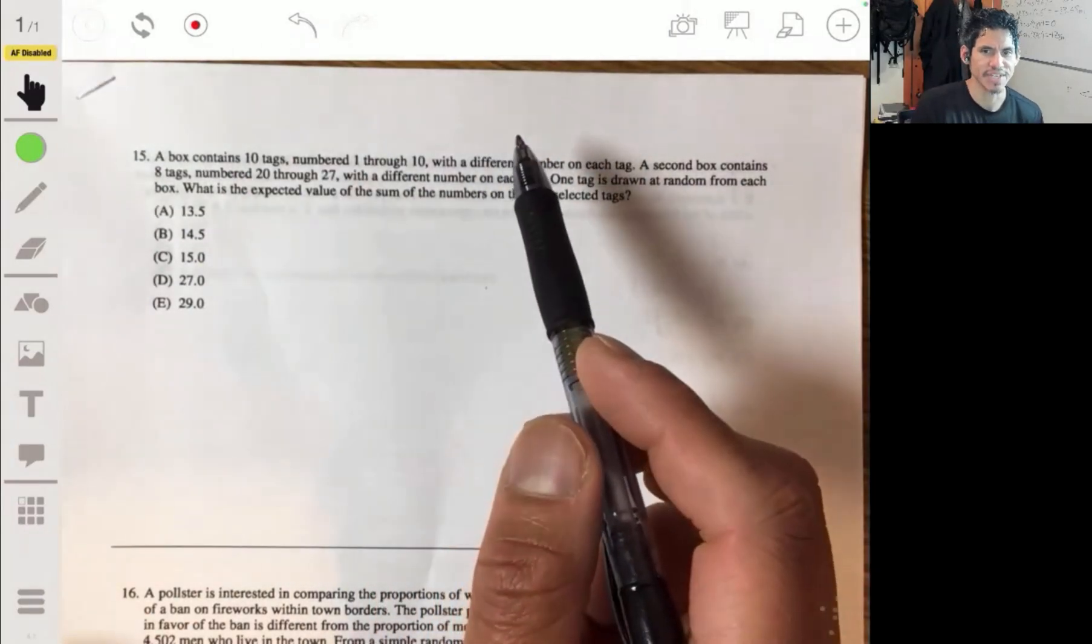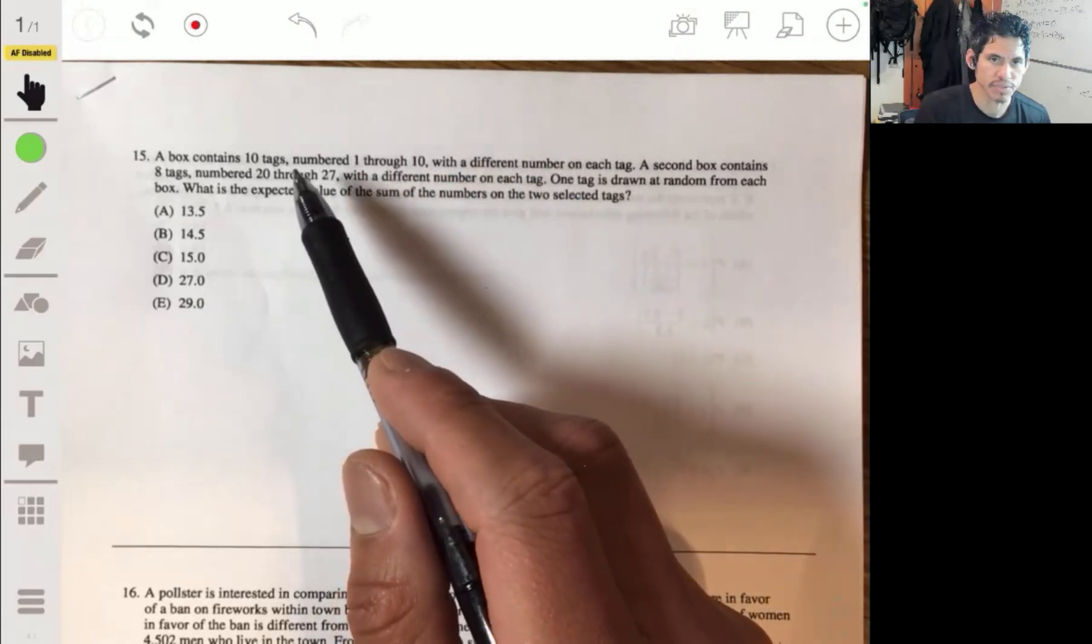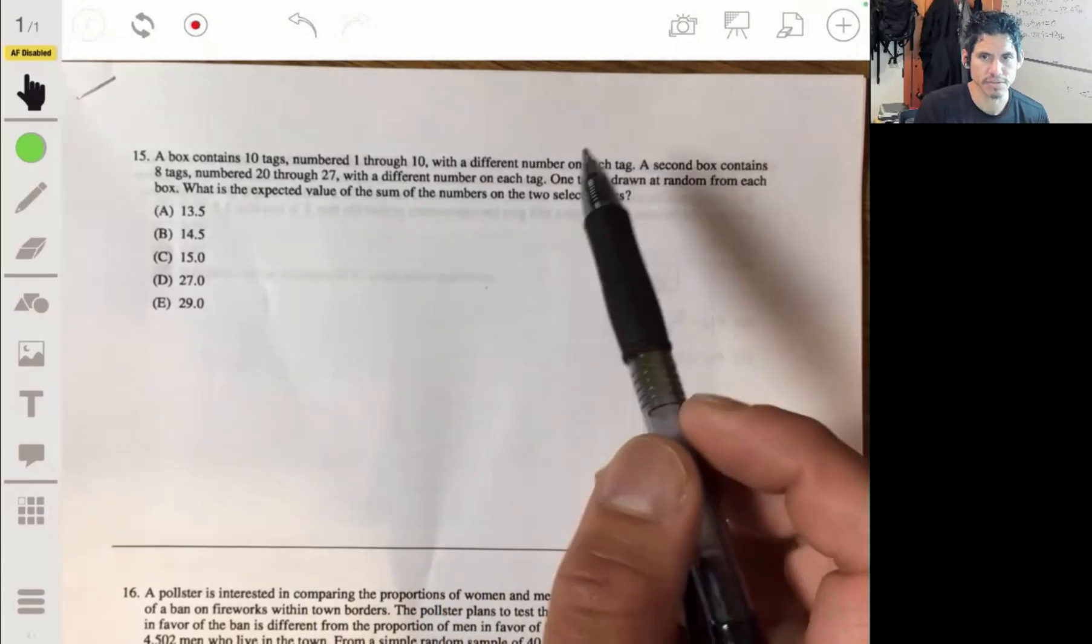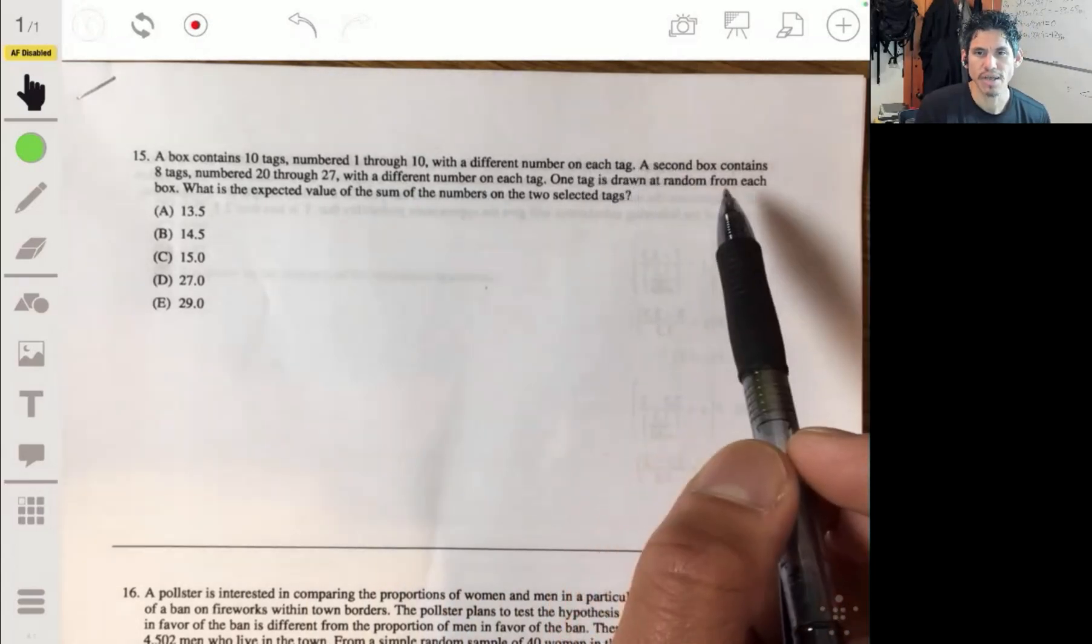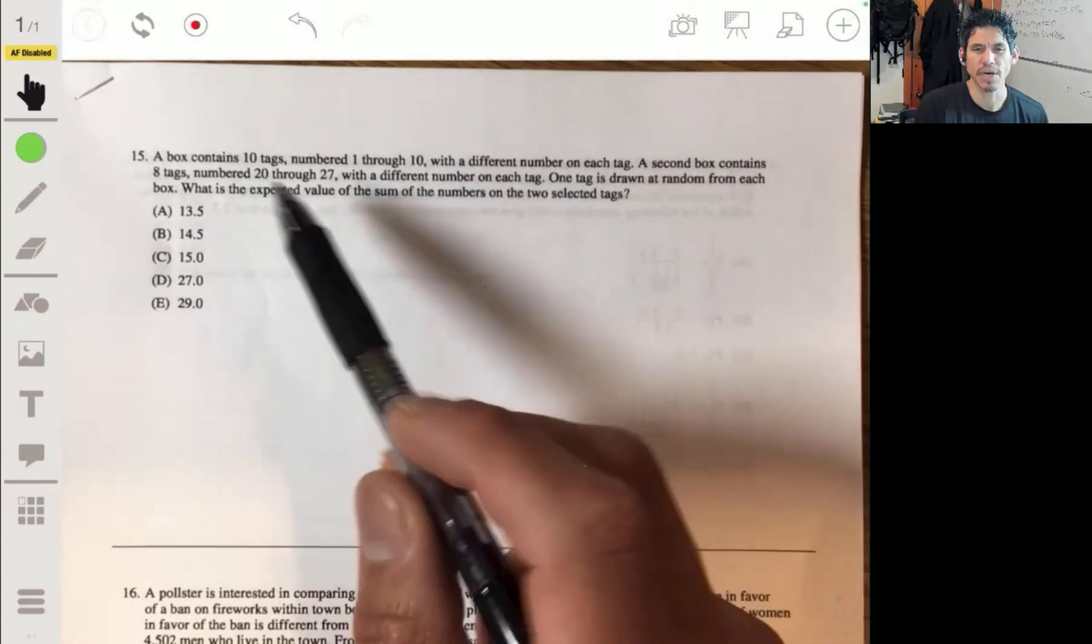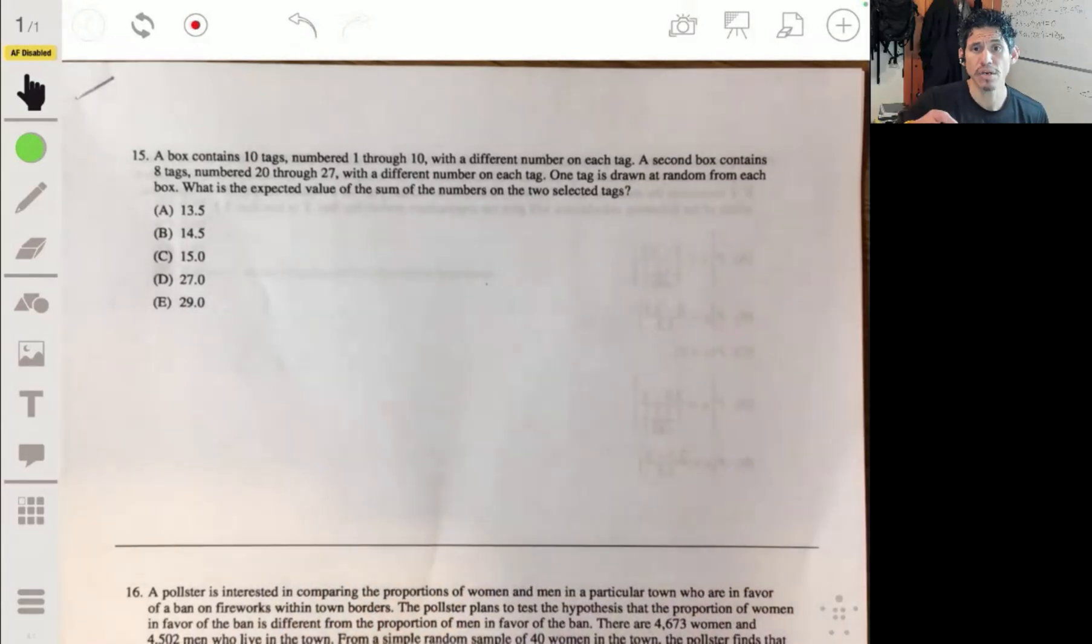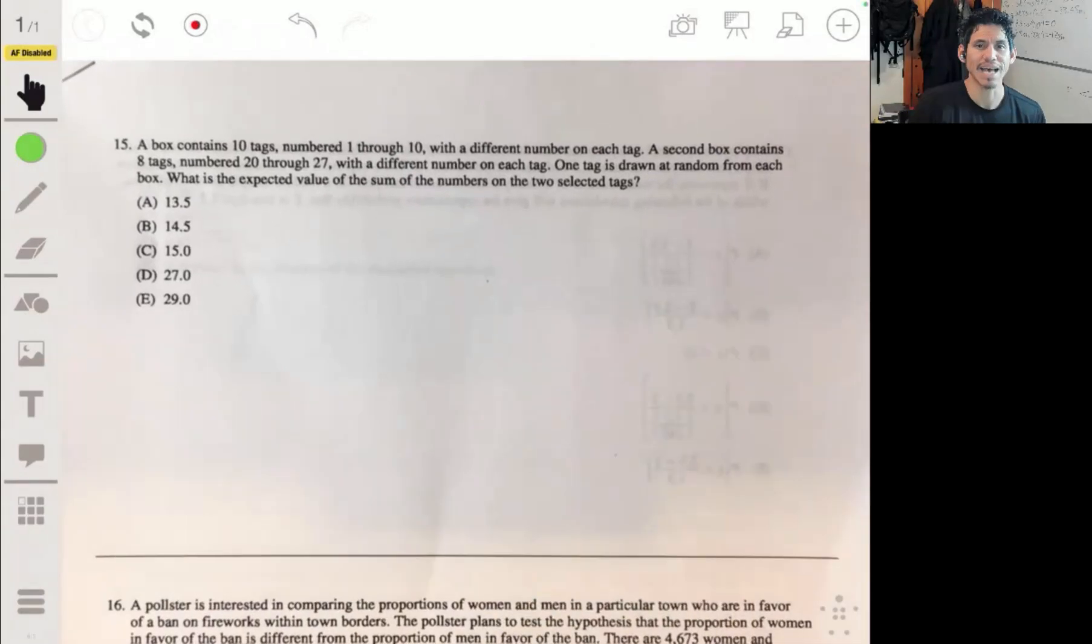They're like 1, 2, 3, 4, 5, 6, 7, 8, 9, 10. The second box contains eight tags numbered 20 through 27 with a different number on each of those tags. So one tag is drawn at random from each box.